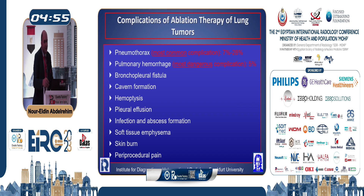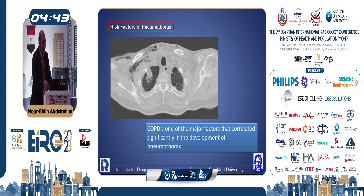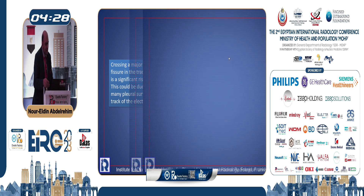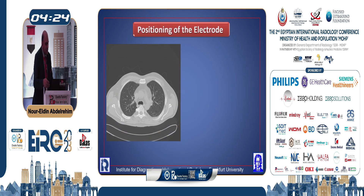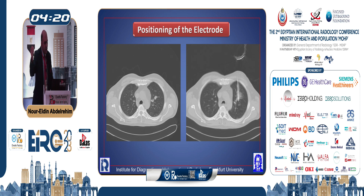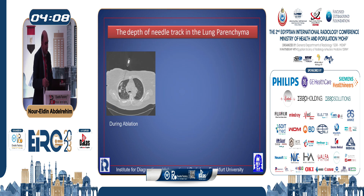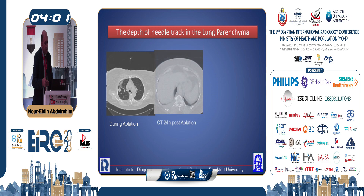Complications of this technique include: pneumothorax — the most common complication — and pulmonary hemorrhage, which is the most serious. Other rare complications include fistula and cavernous formation. Risk factors for pneumothorax include COPD and crossing the pulmonary fissure, which should be avoided as air accumulates immediately. Also avoid crossing pulmonary vessels; go parallel to them to prevent hemorrhage. Basal lesions are also associated with hemorrhage, and a long track inside the lung should be avoided.